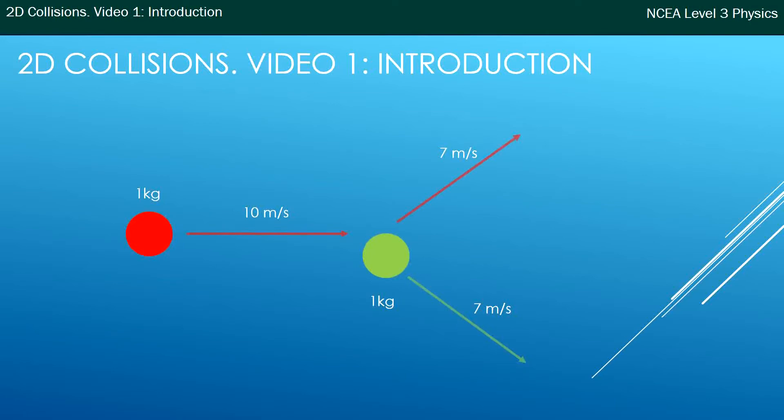If you draw a diagram of that, you might have something like this where the red ball comes in at 10 meters per second and strikes the green ball. The green ball goes to the bottom right at 7 meters per second and the red ball to the top right at 7 meters per second.